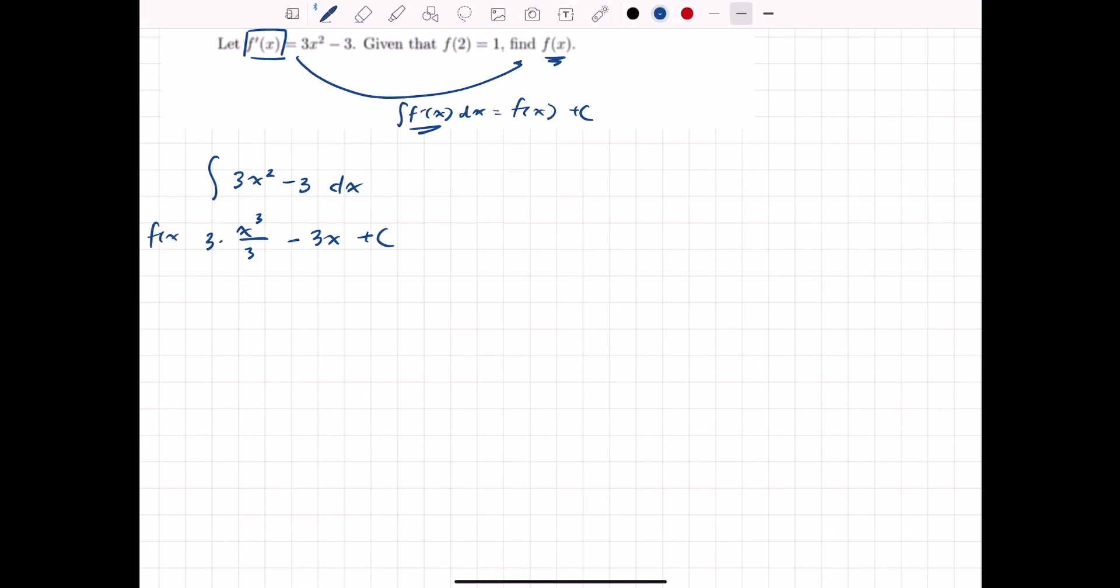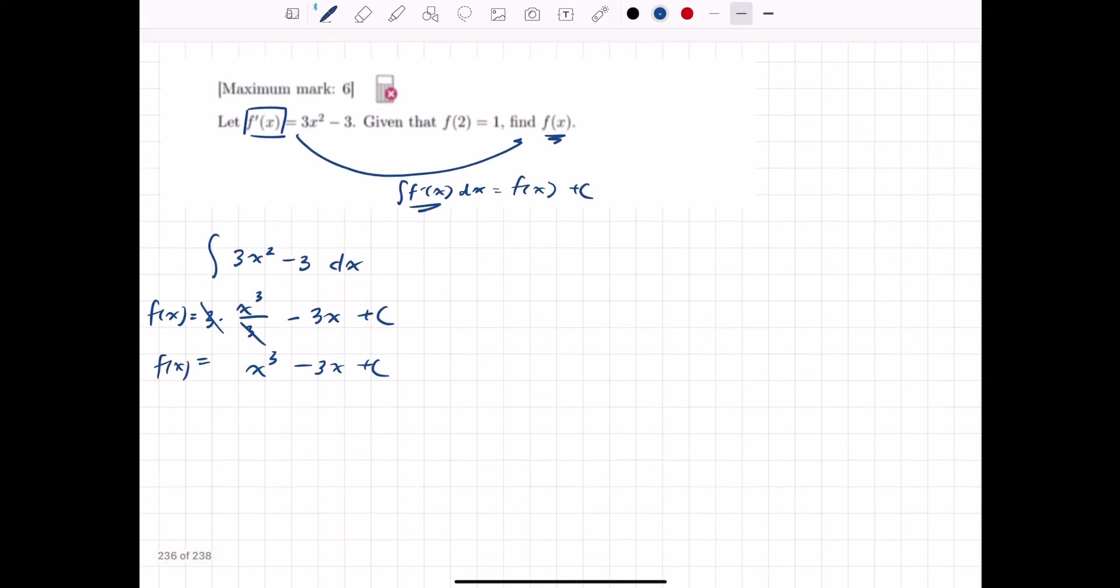So this is our new f of x. And for simplicity's sake, let's cancel that out. So that really just leaves us with x squared minus 3x plus c. Now, you might be asking, well, what is c? And how can we find that out?